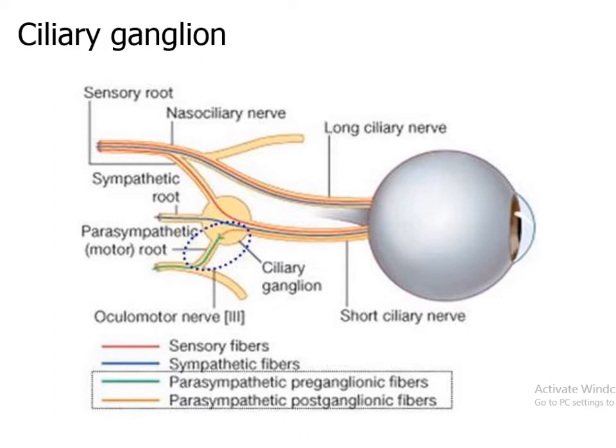These fibers supply the sphincter pupillae muscle. Contraction of the sphincter pupillae muscle constricts the pupil. They also supply the ciliary muscle; contraction of the ciliary muscle increases the curvature of the lens.